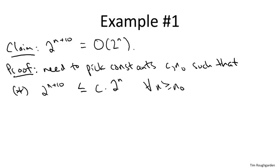So unlike the first basic example where I just pulled the two constants out of a hat, let's actually start the proof and see how you'd reverse engineer the suitable choice of these two constants. A proof would start with 2^(n+10) on the left hand side, and then there'd be a chain of inequalities terminating in c times 2^n.